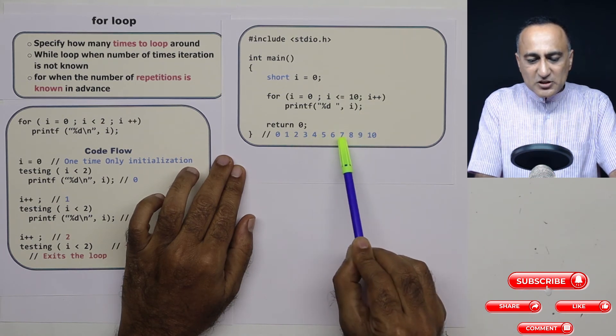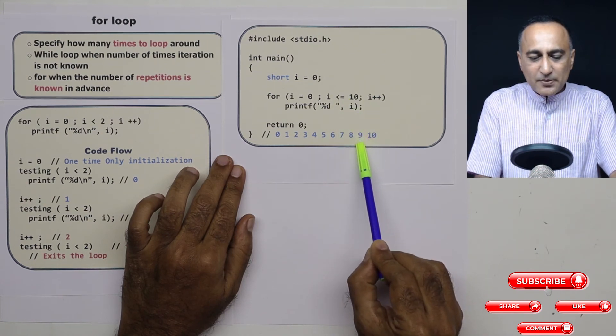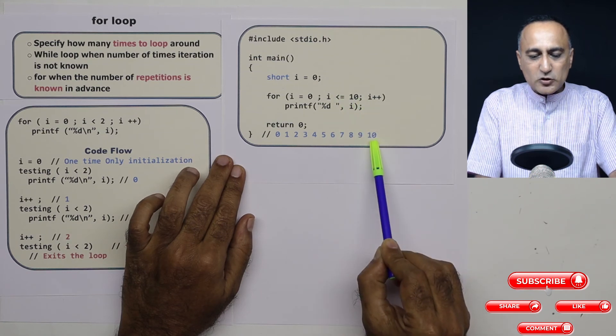So it will print from zero all the way till ten. Suppose I remove this equal to sign, the last number printed would have been nine. Since I have said less than or equal to ten, it is also going to print ten.